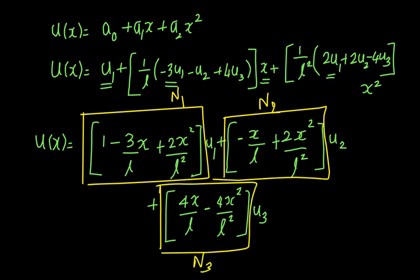These shape functions N₁, N₂, and N₃ are important because by differentiating u(x) we can find du/dx to compute strain, and write it in matrix form as the strain-displacement matrix. Once we have that, deriving the stiffness matrix becomes straightforward. Our next video will cover deriving the stiffness matrix of a quadratic bar element and compare how it performs relative to the linear bar element.